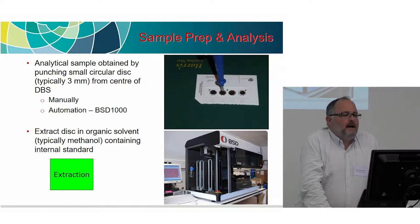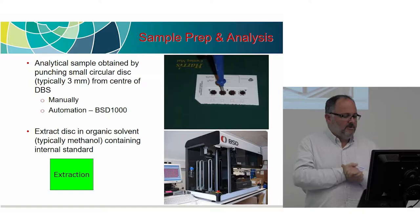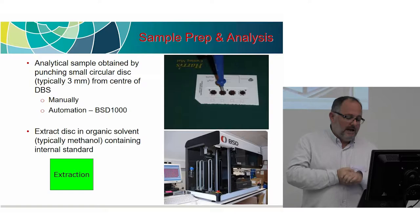Sample prep: we can punch out the card using a manual punch — and I don't know how many people like to punch out 500 spots per night — or you can have an automated system that puts the card in, punches it, and drops it into your 96-well plate. Nice and easy. Then you extract it with your organic solvent, typically methanol, depending on what you're trying to extract, containing your labelled internal standard.